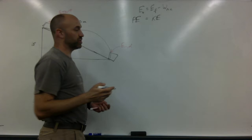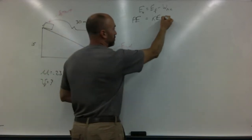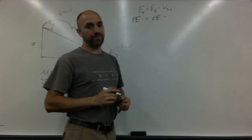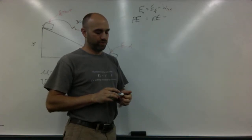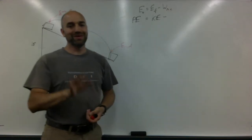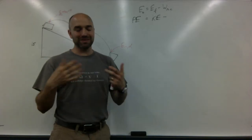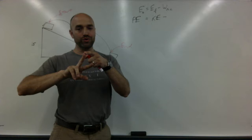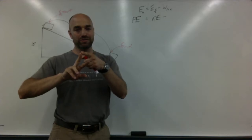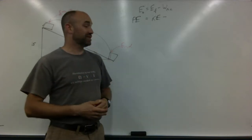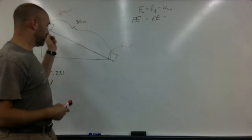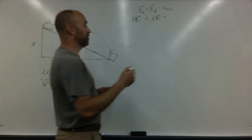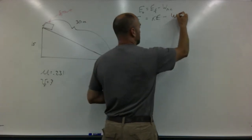Here's the tricky part: we have to subtract off the work not conserved along the way. For this book, work not conserved basically boils down to just two things: friction, and you or a friend pushing on it. Was there friction along the way? Yes. So we have to subtract off the work done by friction.